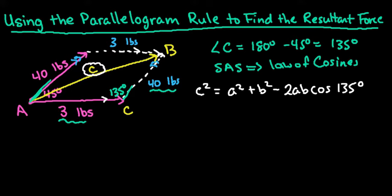I already filled in the number, but I meant to write the formula first. C squared equals A squared plus B squared minus 2AB cosine of angle C, which is 135 degrees.